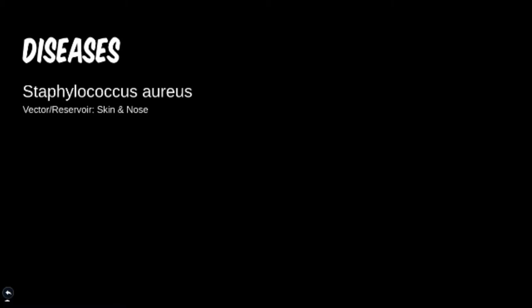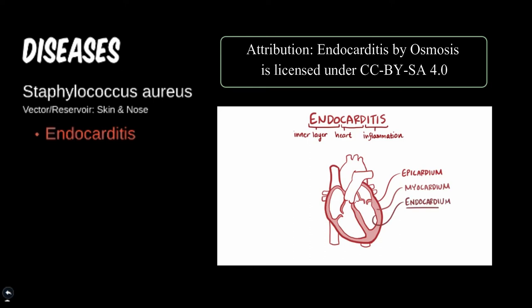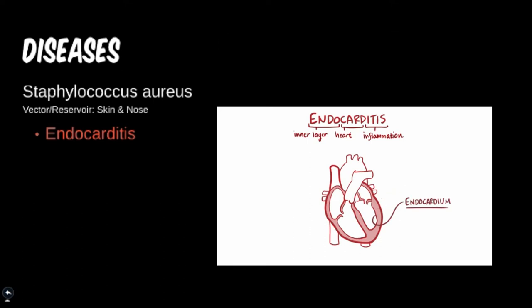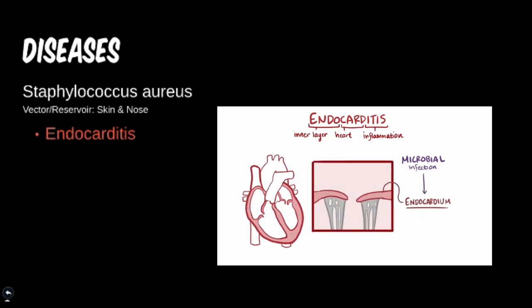One of the diseases staph aureus can cause that isn't intuitive based on where it lives is endocarditis, an infection of the inner heart lining. Cuts in the skin — whether a penetrating wound, surgical incision, or a simple scrape — can allow staph to get through the skin barrier and enter the bloodstream. Once in the bloodstream, its catalase enzyme along with other virulence factors helps it evade the immune system. It then travels through the blood until it reaches the heart, setting up infection there, resulting in endocarditis.